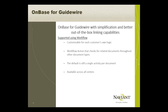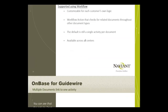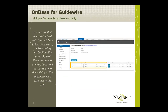The enhancement is customizable for each customer's business logic. A workflow action checks for related documents in more than one document type when configured; the default is still single activity per document, and this is available across all centers. In this example, you can see the activity 'network insured' links to two documents — the loss history and the confirmation letter — both of which are important as they relate to the activity.